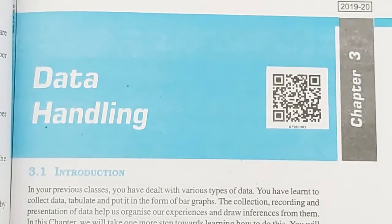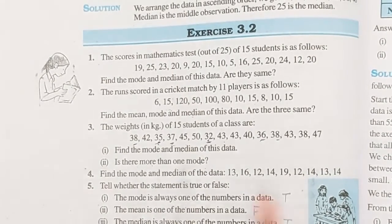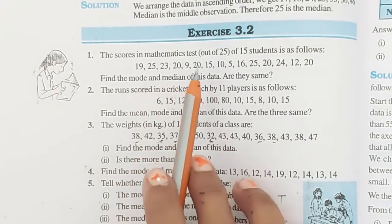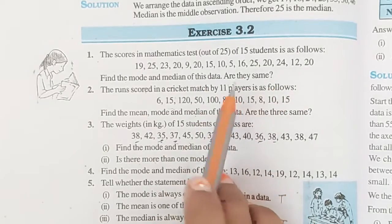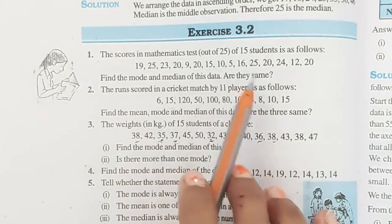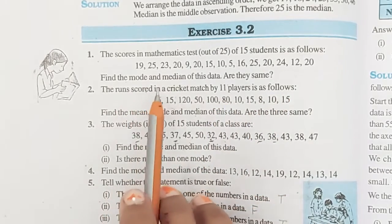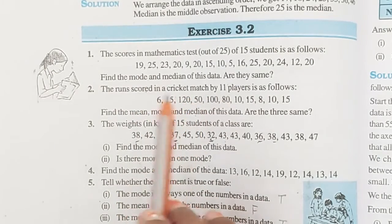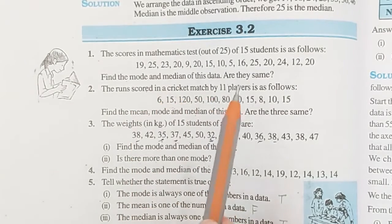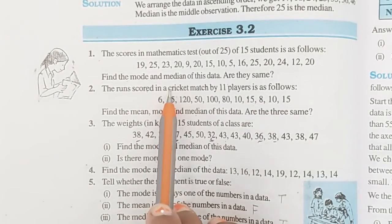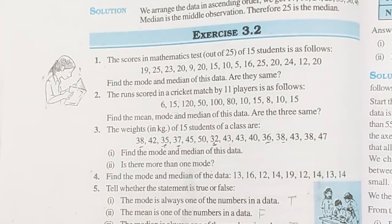Class 7, Data Handling. We are going to start Exercise 3.2. The question is: the scores in a mathematics test of 15 students are given. In this exercise, three things need to be found: Mode, Median, and Mean.